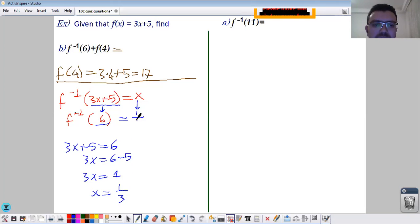So this result means to get 6 inside the parentheses, x must be equal to 1 over 3, and that will be the result. F inverse of 6 is equal to 1 over 3. So you will have in here 1 over 3 plus 17.